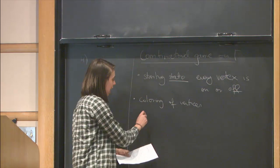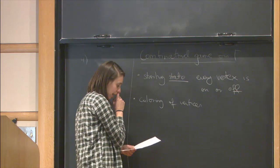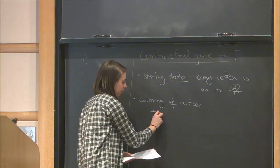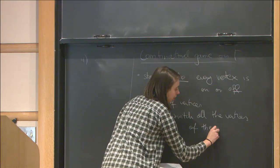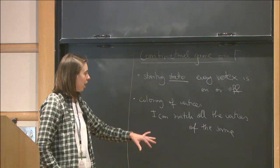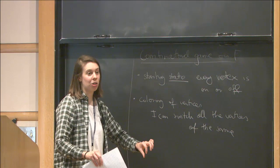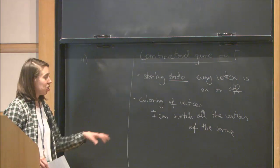So: I'm at some state, some vertices are on, some are off. I choose some color and switch all vertices of that color — if they were off they become on, and vice versa. That's the game mechanic.